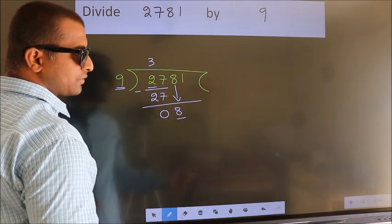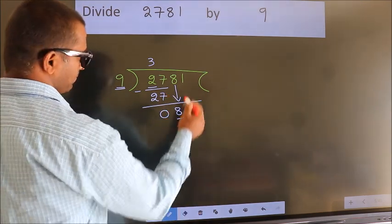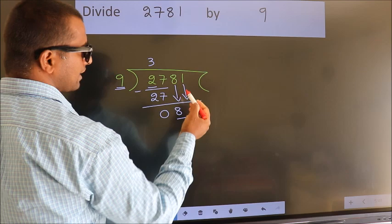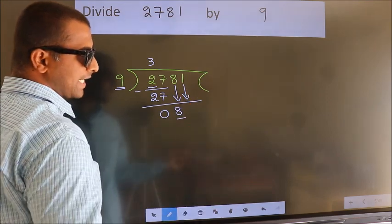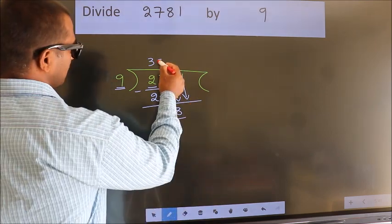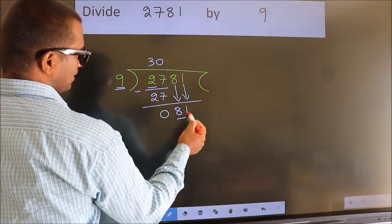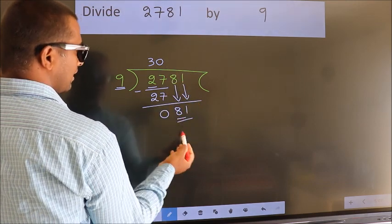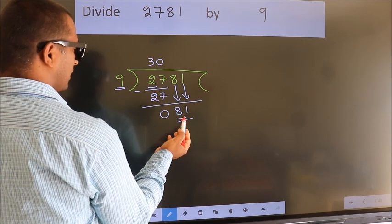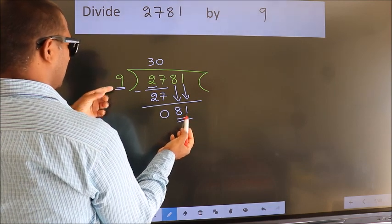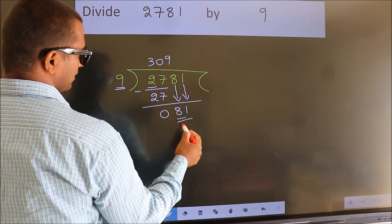So we should bring down the second number. And the rule to bring down the second number is put 0 here. Then only we can bring down this number. So 81. When do we get 81? In the 9 table, 9 nines 81.